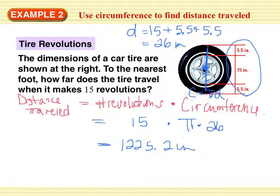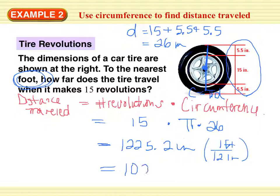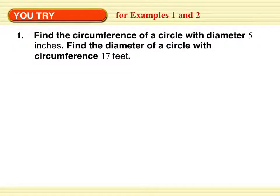To the nearest foot — that's what we need — so I need to change that into feet. 12 inches is 1 foot, so if I divide by 12, I get 102.1 feet, which to the nearest foot is just 102 feet. You try: find the circumference of a circle with a diameter of 5 inches, then find the diameter of a circle with a circumference of 17 feet. Push pause and try on your own.